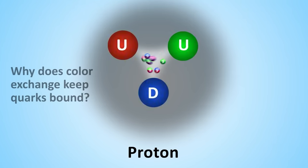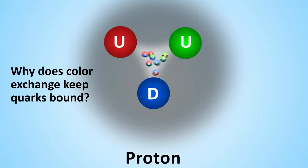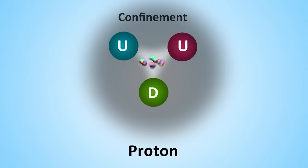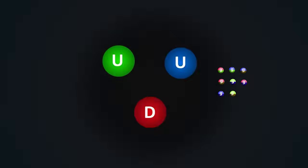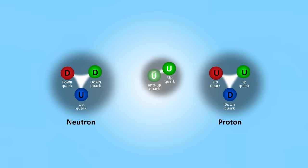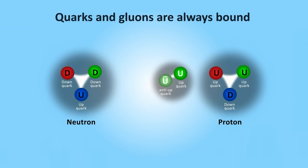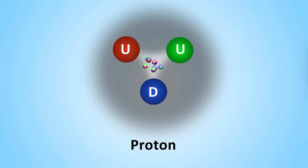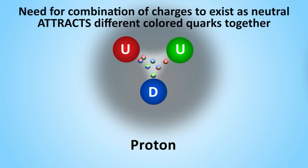Now you might ask, why does color exchange keep them bound? Well that's a good question. This has to do with an idea called confinement. Essentially what this means is that a color charged particle cannot exist on its own. Quarks and gluons are color charged particles. All experiments have confirmed that free quarks and free gluons do not exist. They are always found bound to other quarks and gluons. Why? Because color charges exist in a way such that the combination of colors is always neutral.